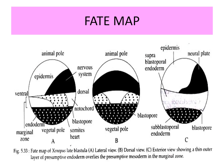Now looking at the fate map of Xenopus, there are two poles: the animal pole and the vegetal pole. The animal pole is where the polar body comes out. The vegetal pole is opposite to the animal pole, is yolky, and is responsible for the endoderm — shown in black colored with white spots. The animal pole has smaller cells forming the epidermis, and it also forms the nervous tissue.